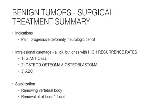In summary for benign tumors, surgical indications include persistent pain, progressive deformity, and neurologic deficit. Pain is mainly relevant if the tumor has compromised the structural support of the spine causing mechanical instability. Intralesional curettage is acceptable, but tumors with high recurrence rates — giant cell tumors, osteoid osteomas, osteoblastomas, and ABCs — warrant consideration of en bloc excision, weighed against associated morbidity and mortality based on location. Stabilization is required if a vertebral body or at least one facet joint is removed.